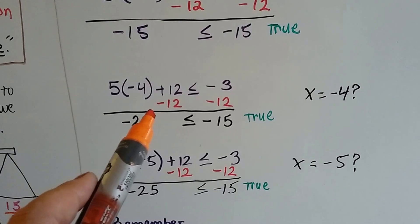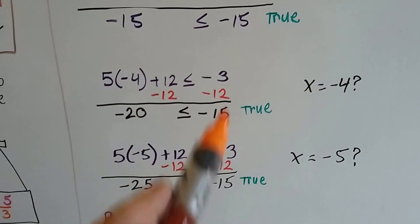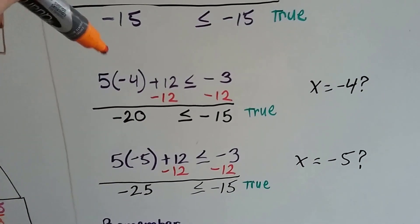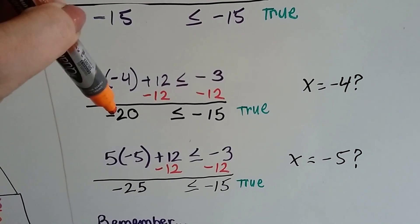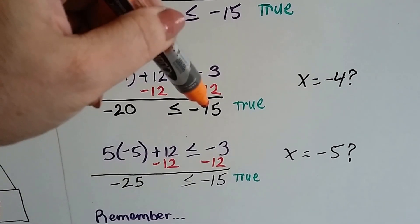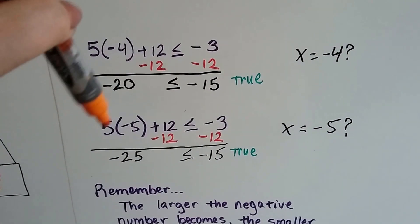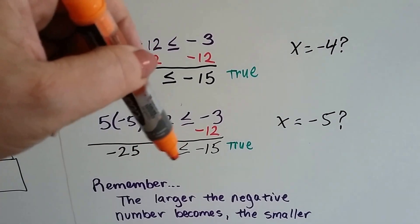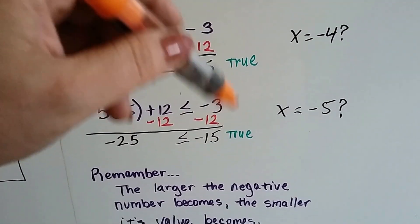We're just plugging in a possible value, we're not eliminating to solve it. So 5 times negative 4 is negative 20, and that is smaller than negative 15. And if we do 5 times negative 5, then negative 25 is less than or equal to negative 15. And these are true.